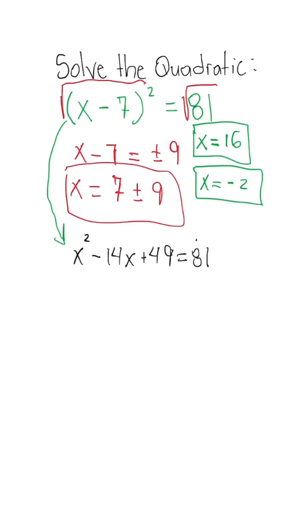Then we could subtract 81 on both sides. Once we do that, we're going to have x squared minus 14x minus 32 is equal to 0.